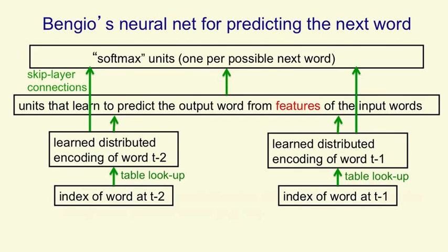So at the bottom you can think of us as putting in the index of a word, and you could think of that as a set of neurons of which just one is on. Then the weights from that on neuron will determine the pattern of activity in the next hidden layer, and so the weights from the active neuron in the bottom layer will give you the pattern of activity in the layer that has the distributed representation of the word, that is its feature vector.